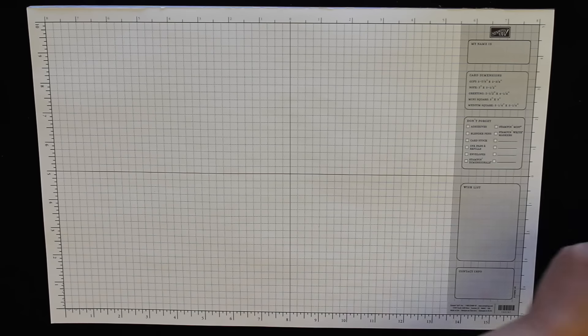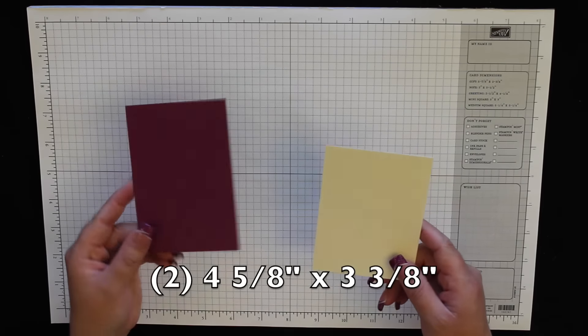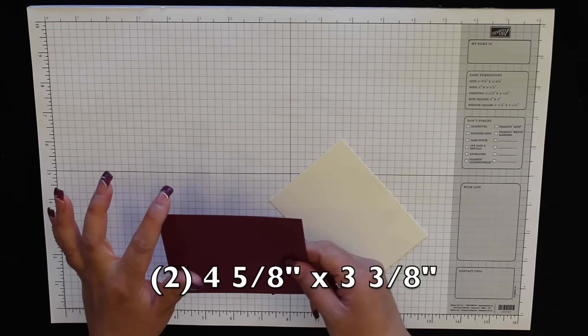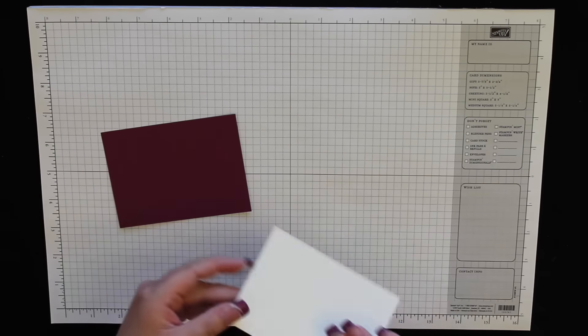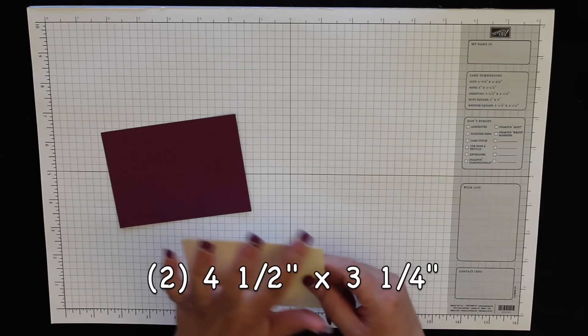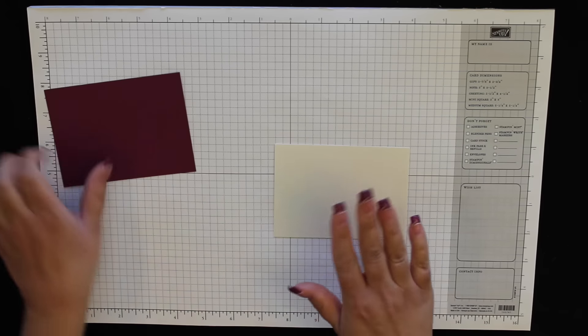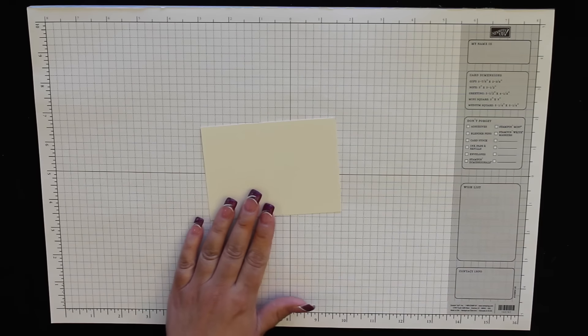Okay, for the card you're going to need two pieces of this Rich Razzleberry. This measures four and five-eighths by three and three-eighths, two of these. Two pieces of Very Vanilla cardstock, this measures four and a half by three and a quarter.